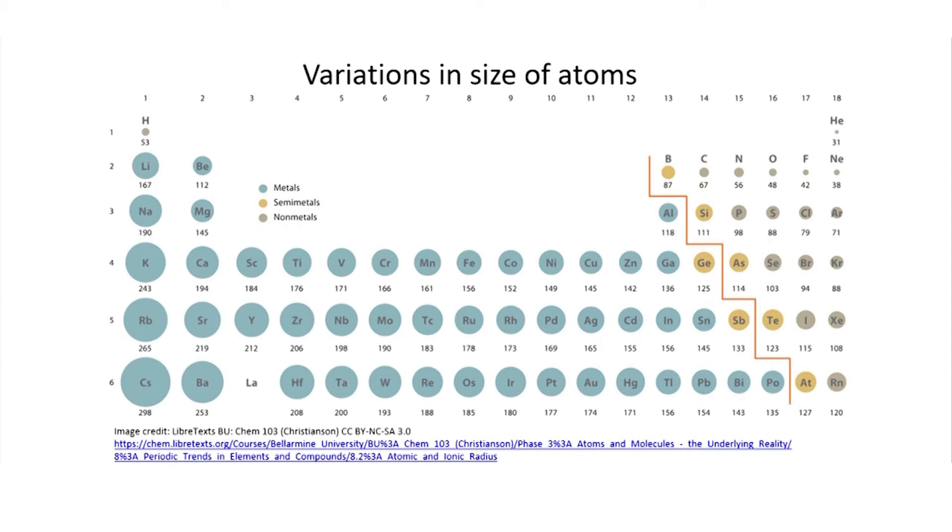This is the periodic table of elements where the relative size of each atom is represented by the size of each disk. In a way, this represents the radius of the orbit of the outermost electron in each atom.